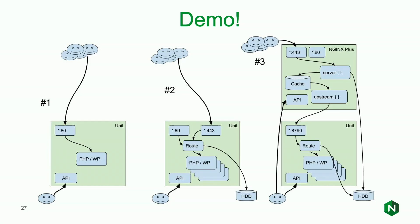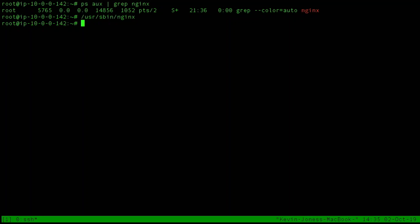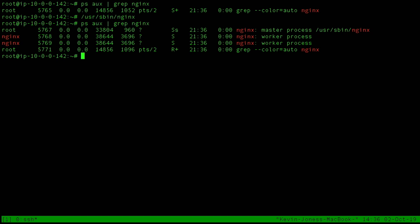Now we're going to build on the demo. The previous demos had a unit running with PHP going to WordPress, and WordPress was scaled. What I'm going to do is set up another binary — Nginx Plus — listening on port 80 with the cache in front, reverse proxying to the unit process running locally on port 8790. Let's first check if Nginx is running — it's not, so we can start Nginx. Nginx is running now. We have two processes — this is probably a two-core server — so two workers and one master.